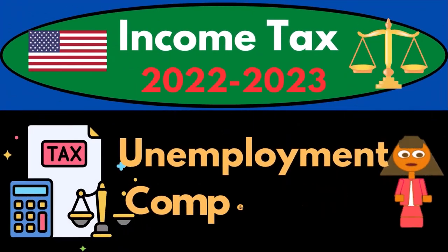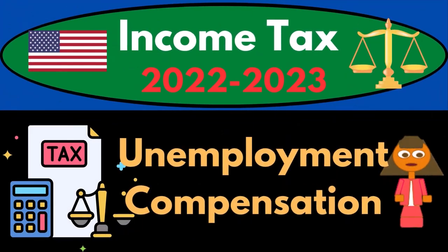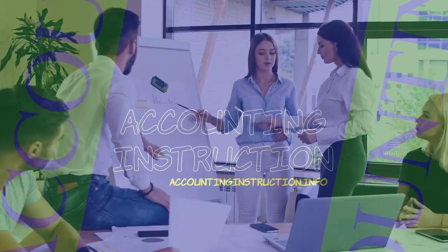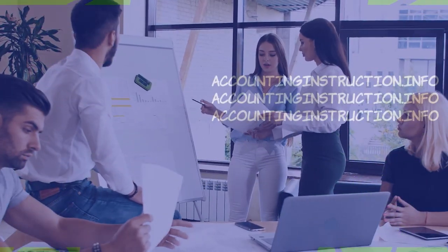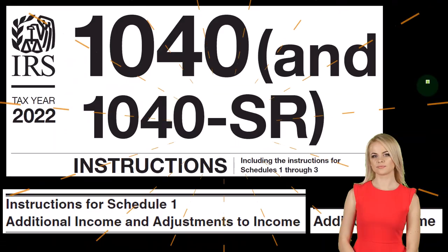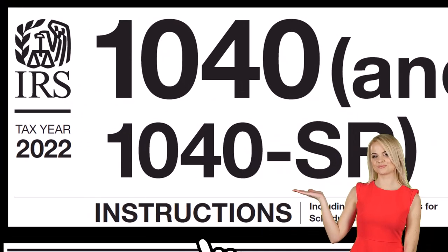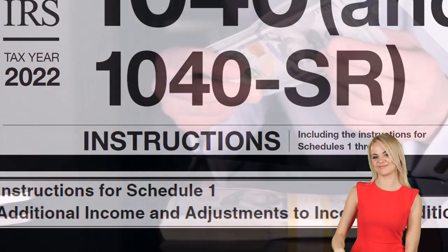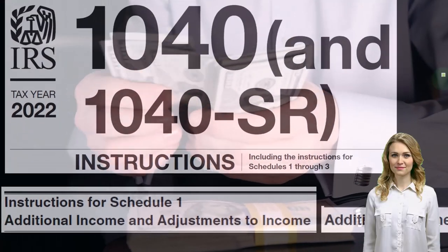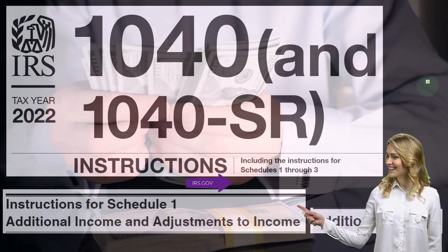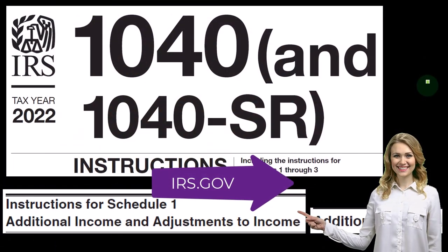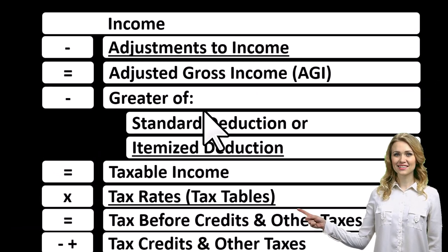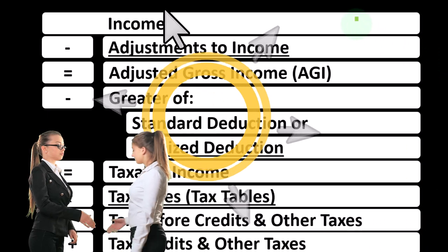Income Tax 2022-2023: Unemployment Compensation. Let's do some wealth preservation with some tax preparation. Most of this information comes from the Form 1040 Instructions, Tax Year 2022, Instructions for Schedule 1 Additional Income and Adjustments to Income, Additional Income section, which you can find at the IRS website, irs.gov. When looking at the Income Tax Formula, we are once again looking at line 1 — income.